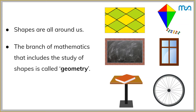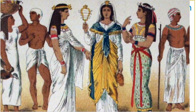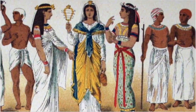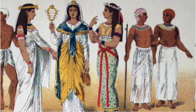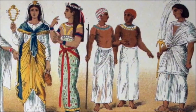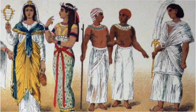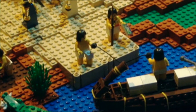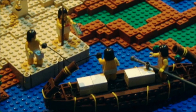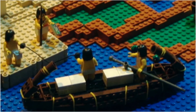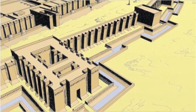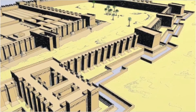It is believed that geometry's origins go back to approximately 3000 BC, to ancient Egypt. Every year the River Nile flooded and erased the boundaries that the Egyptians used to demarcate their lands. The Egyptians would then remeasure their lands and mark their boundaries once again.